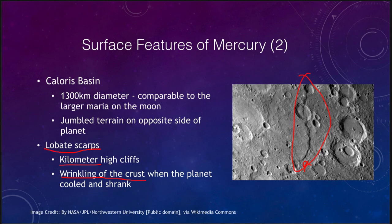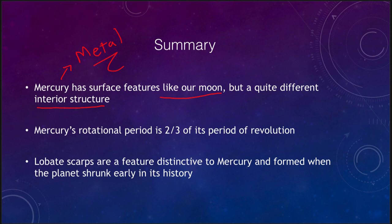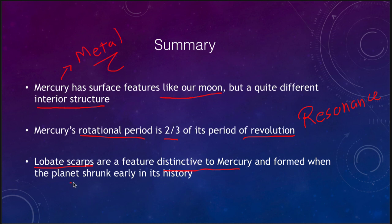Mercury has been explored by just those two spacecraft, though MESSENGER's long time in orbit gave us a complete map before it finally ran out of fuel and crashed into the surface — giving Mercury one more crater. To summarize: Mercury has surface features much like our own Moon but a very different interior structure, with 70 percent of its diameter being the metallic core. Its rotational period is two-thirds of its period of revolution, giving it a two-to-three resonance. And the lobate scarps are a distinctive feature probably formed when the planet shrank early in its history.